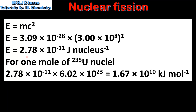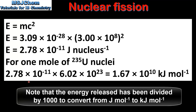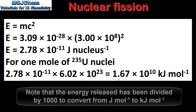This is the energy released for the fission of one uranium-235 nucleus. To calculate the value for 1 mole of uranium-235 nuclei, we multiply the value for 1 nucleus by the Avogadro constant, which gives us 1.67 times 10 to the 10 kilojoules per mole.